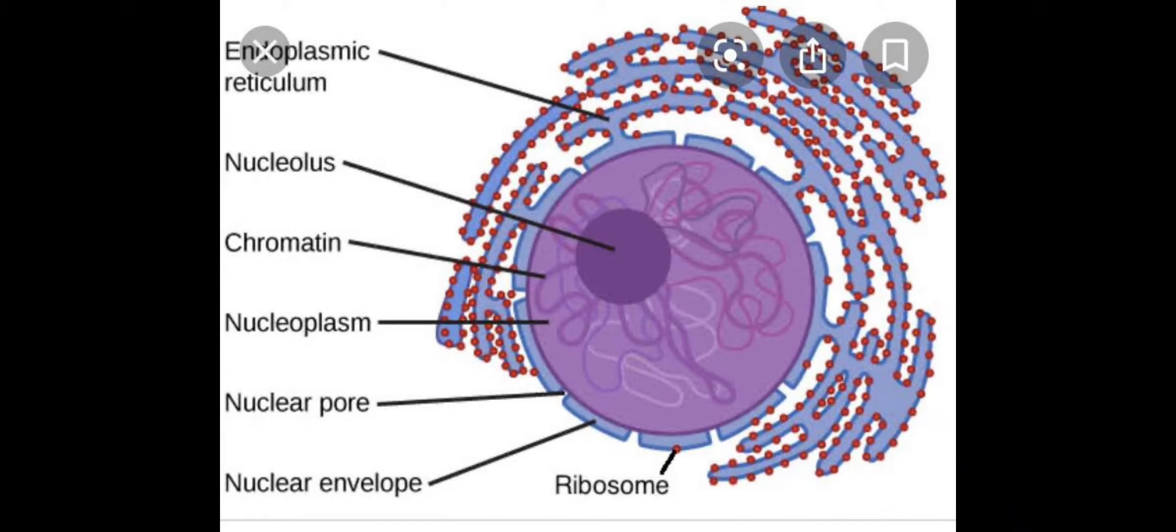Now let us see the detailed structure of nucleus. You will be seeing the membrane which is known as nuclear envelope, which is a double wall membrane. The nuclear envelope is in continuation with rough endoplasmic reticulum, which is involved in protein synthesis. Inside the nuclear membrane is the fluid which is known as nucleoplasm.